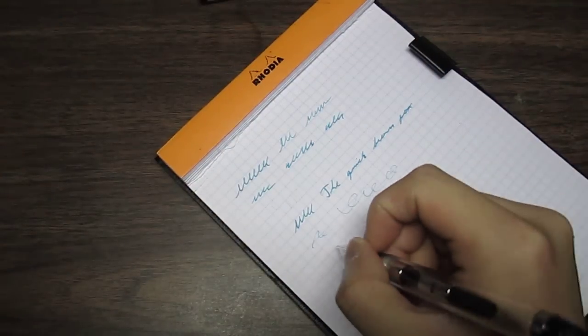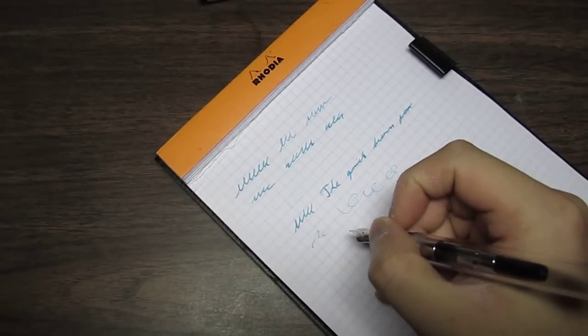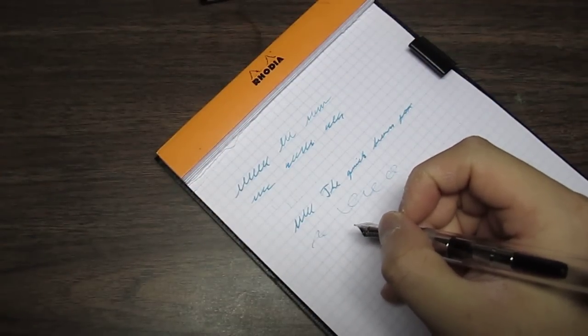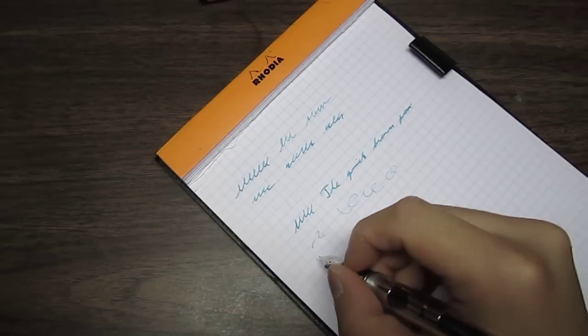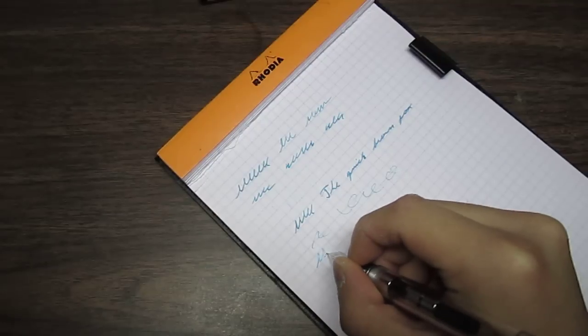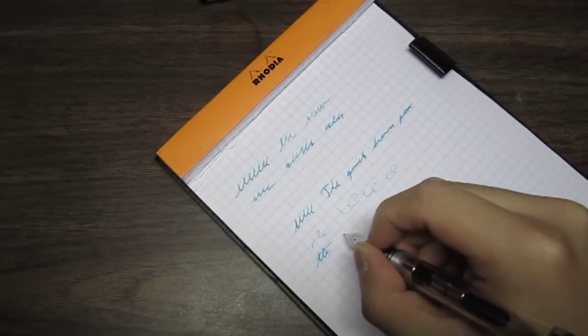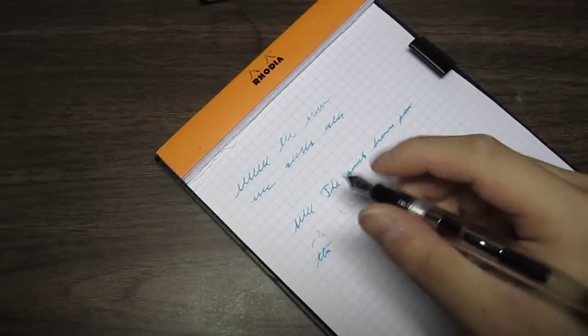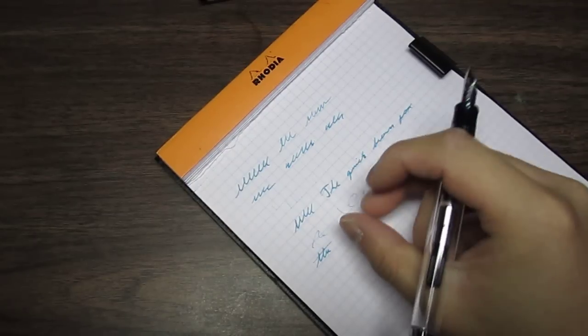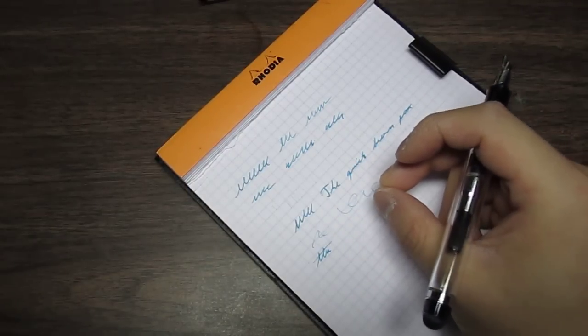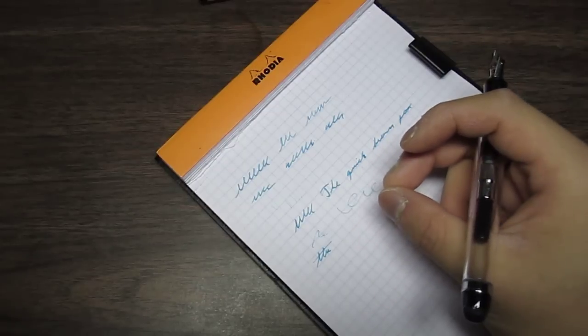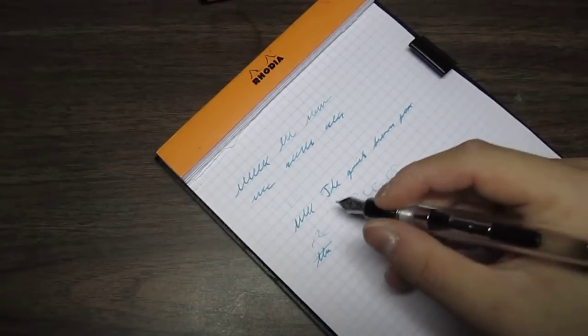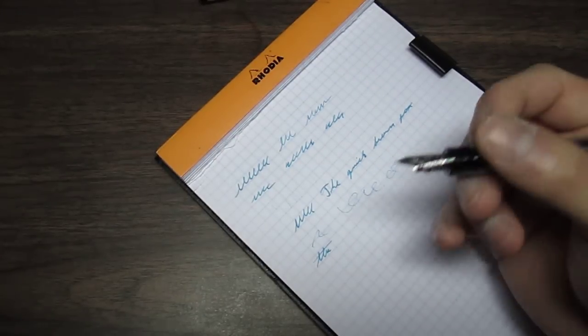Because what happens is if you force too much downward pressure, you can bend the nibs, you can bend the tines of the nibs, and cause the nib to spring. And also what happens is when people put too much downward pressure, they have the tendency of actually feeling scratchiness because the tines spread. The tines can kind of catch on paper that isn't super smooth. You may feel that it's actually scratchy when it really isn't. You just really have to lighten up your pen hand.